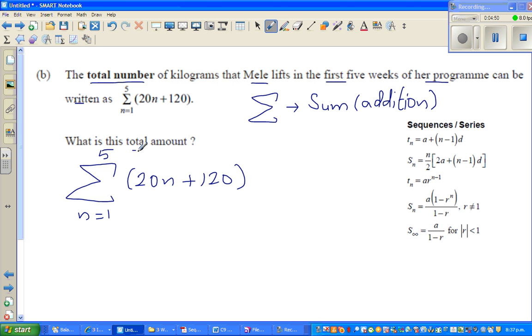Basically what they're asking you to do is what's the total amount, which means you have to plug in or substitute 1 to 5 in place of n. So this means I'll put (20 times 1 + 120) plus (20 times 2 + 120).